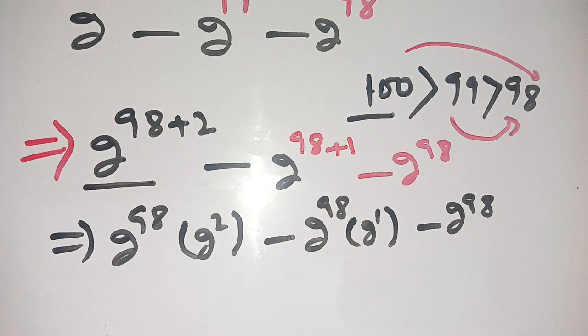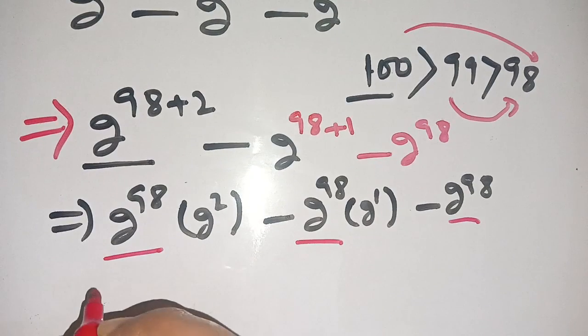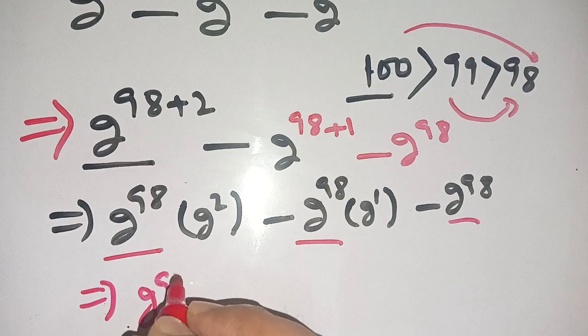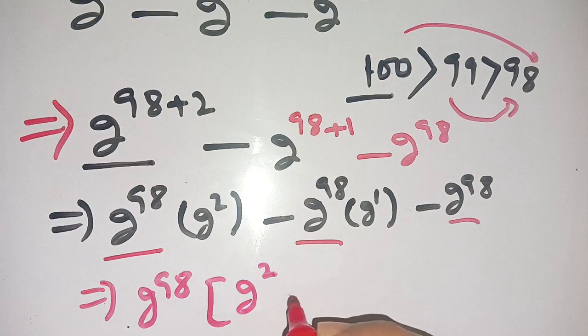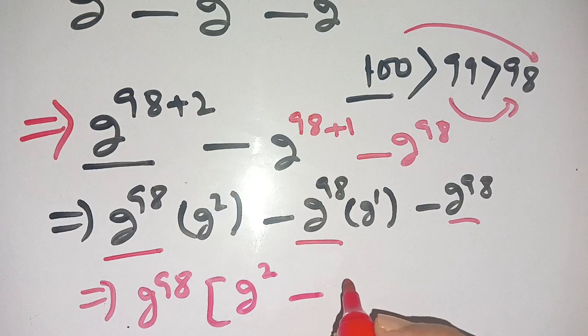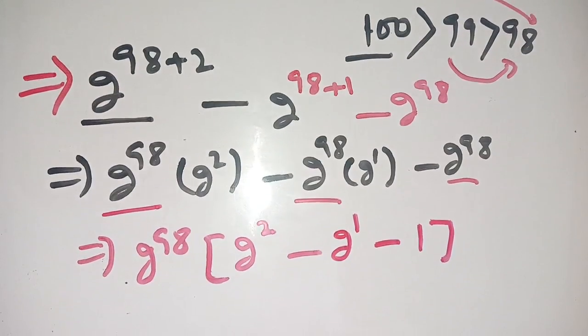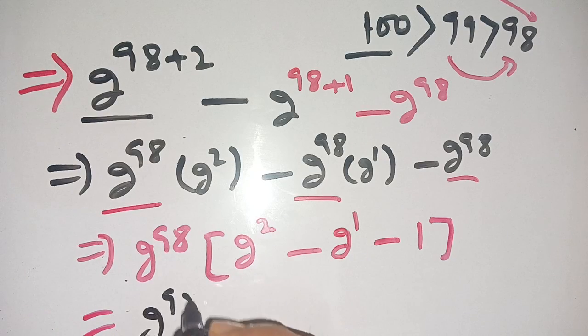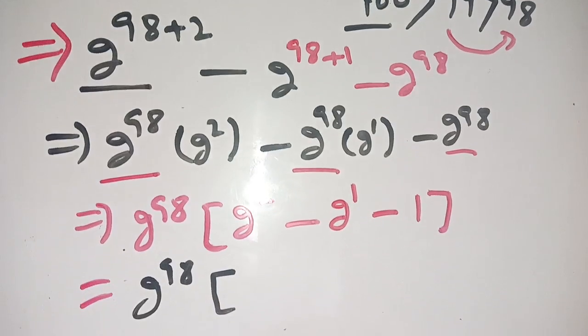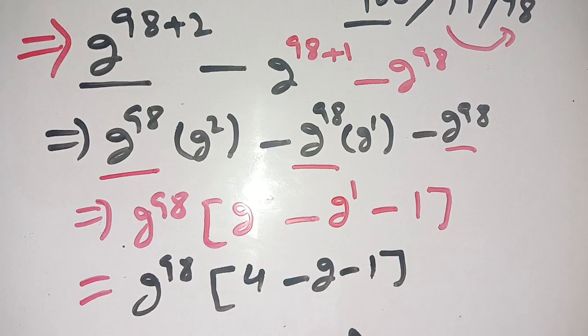You see that 2^98 is in all these terms. We take out 2^98 from each of the terms. We get 2^98 times the remaining terms: 2^2 minus 2^1 minus 1. Now we have 2^98 as it is, and 2^2 is 4, minus 2, minus 1.